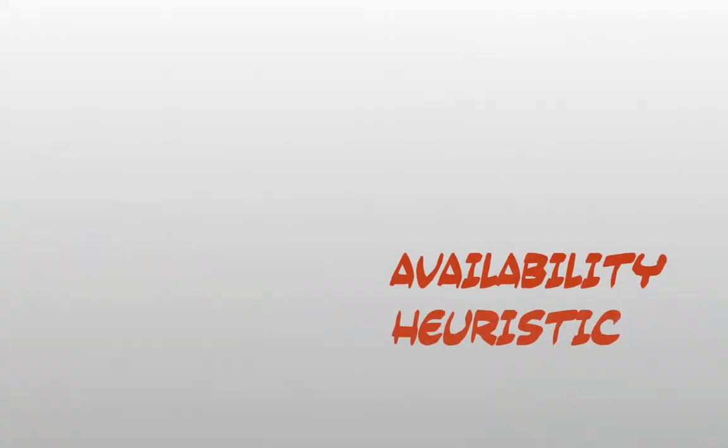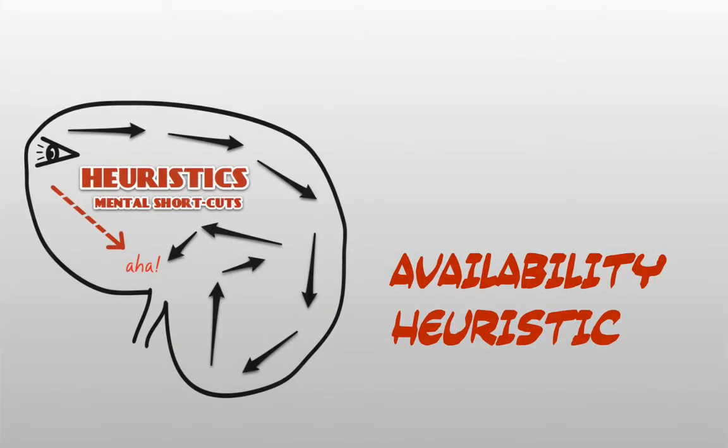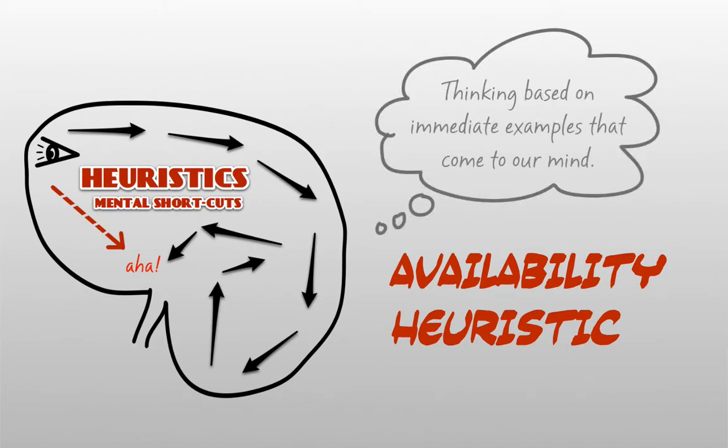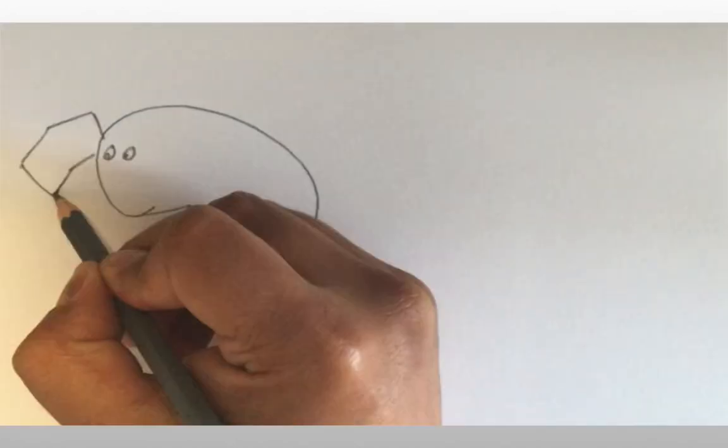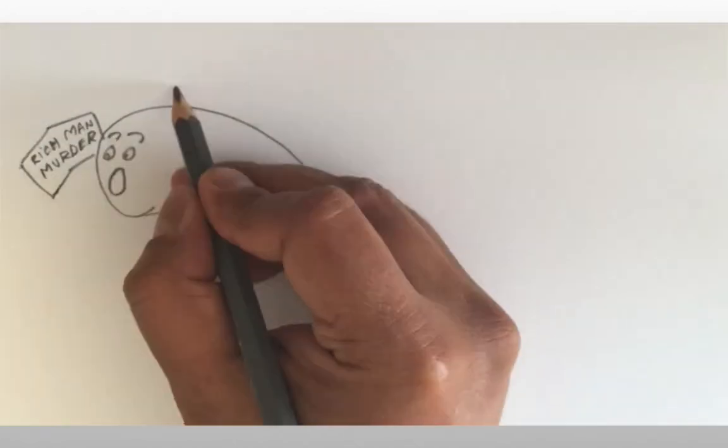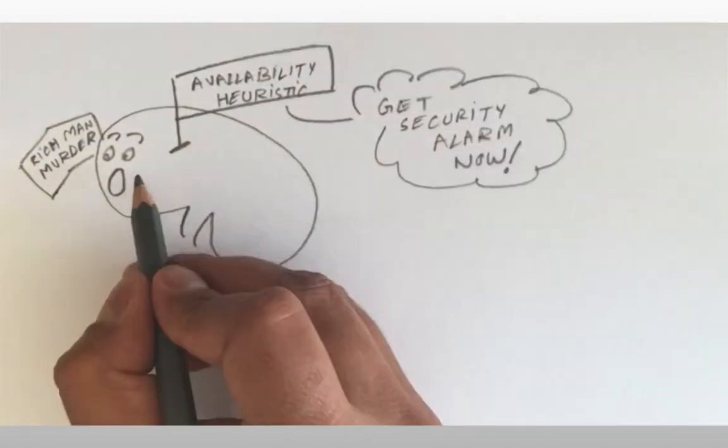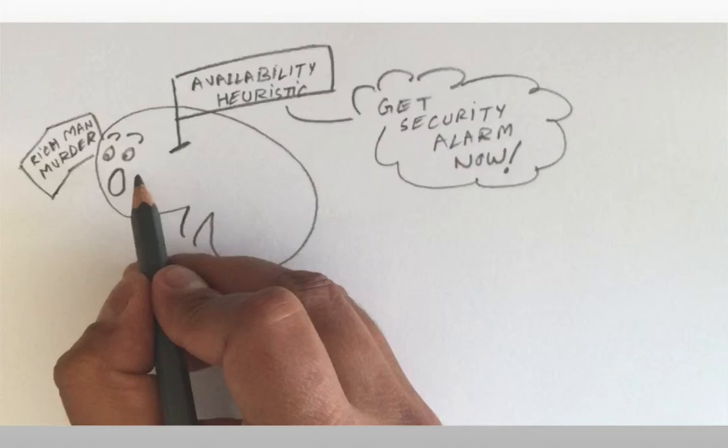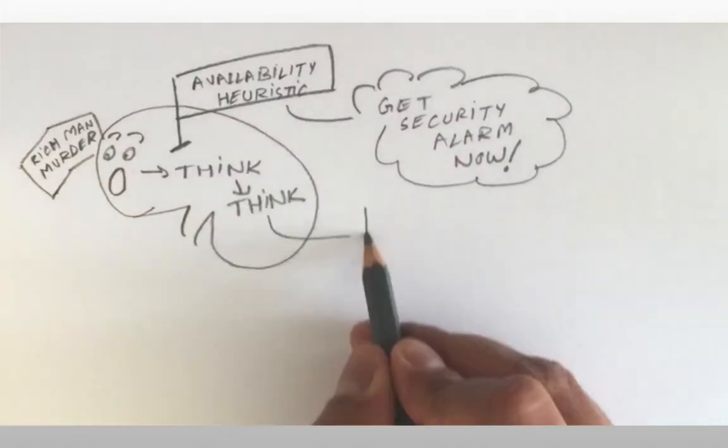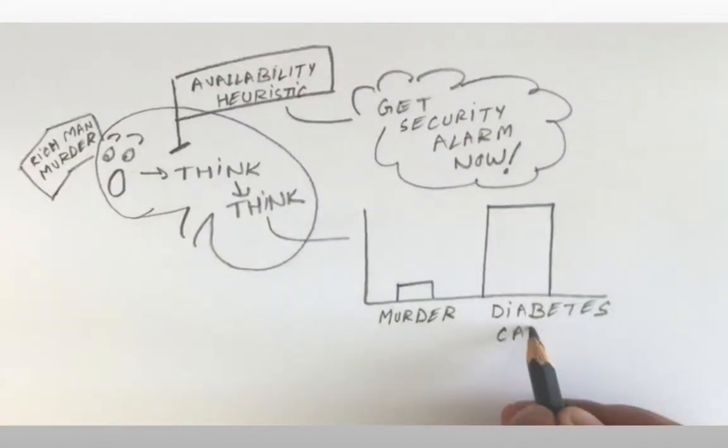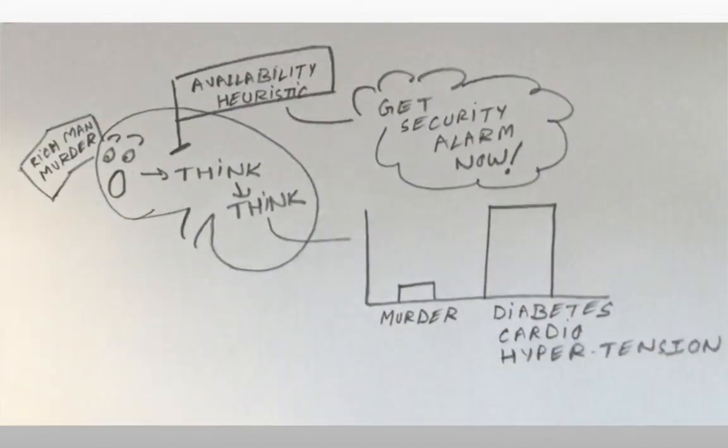For example, availability heuristic is a mental shortcut that helps us make decisions based on the first example that comes to our mind or something we have recently read. Consider this: there is a lot of media coverage about the gruesome murder of a rich person. If you are rich, it is more than likely that influenced by this news, you will take some safety precautions even though more people die of rich lifestyle diseases than rich lifestyle murders. Rationally speaking, instead of installing a burglar alarm, you should be taking precautions against diabetes.